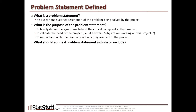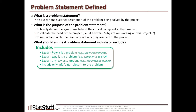When you look at a problem statement, there are a few things we should include or exclude for an ideal problem statement. As far as things that should be included, we should at least explain how it is a problem — using clear measurements that define the pain point of the business we're feeling. Next, we should also explain why it's a problem: the size of it, the severity, the magnitude of what we're trying to solve, or how it's tied to the CTQ drill down — the critical metrics of the organization.